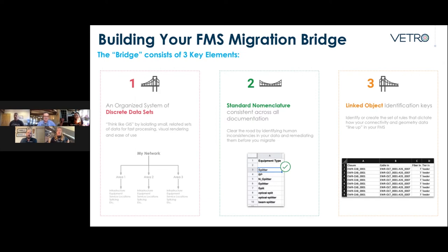Starting with three key elements is important. Number one: an organized system of discrete data sets, meaning your network is probably a big chunk of data — breaking it down into logical, consistent pieces is a great place to start. Number two: standard nomenclature that is consistent across all your documentation, so misspellings, jargon, or inconsistent naming conventions are eliminated. Number three: linked object identification keys, which connect your connectivity data to your geometry.